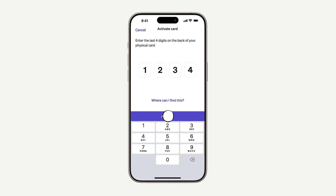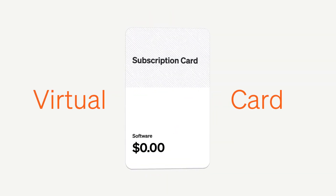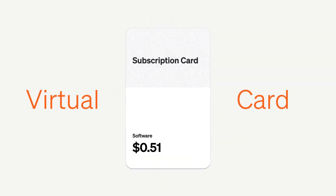It usually takes 7 to 14 days for your card to arrive. In the meantime, you can use a virtual card to spend. Depending on your company setup, you may already have your first virtual card created for you. If not, we'll show you how to create one later in this video.